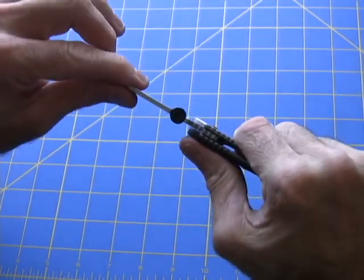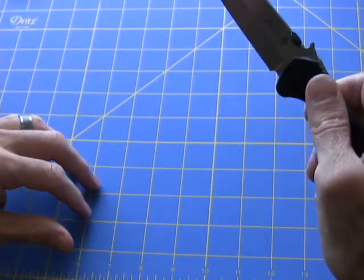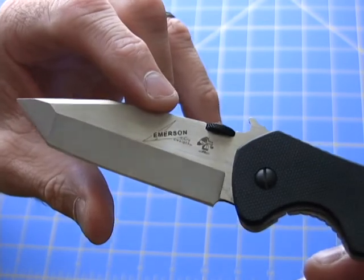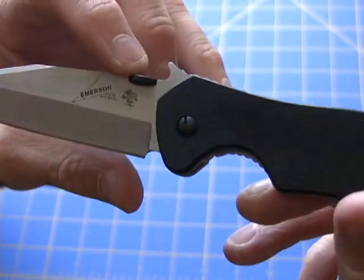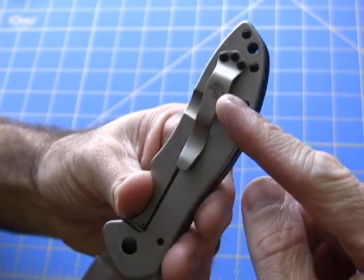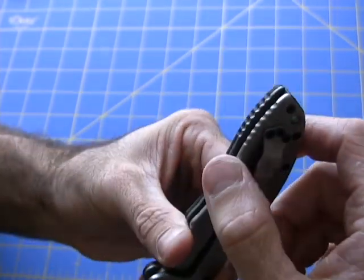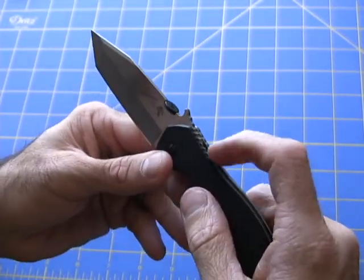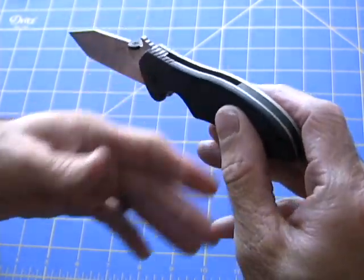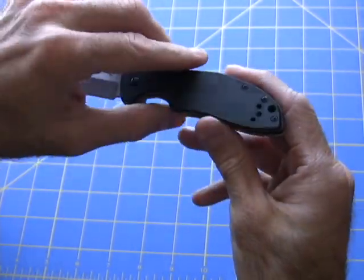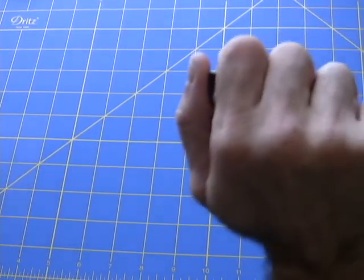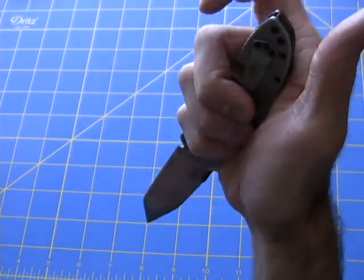You can see the Kershaw logo and Emerson's logo, that little skull. The skull is also found on the back on the pocket clip. You'll find some jimping here on the top of the blade and the top of the handle. There's also some on the bottom of the handle, possibly for reverse grip.